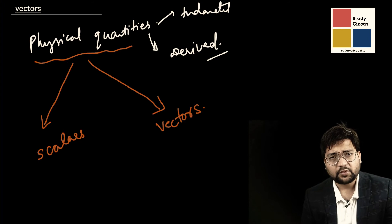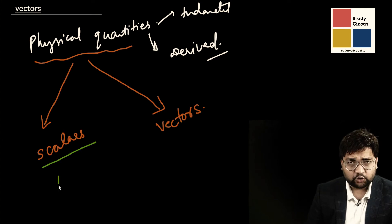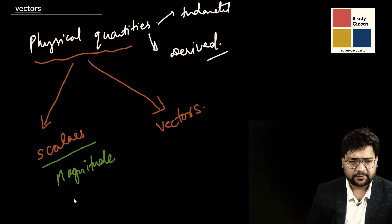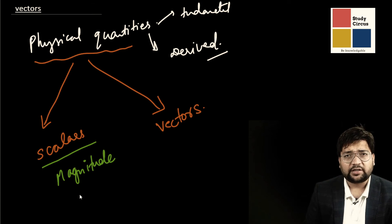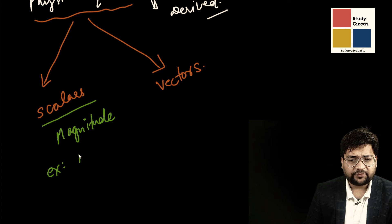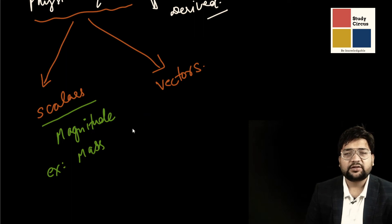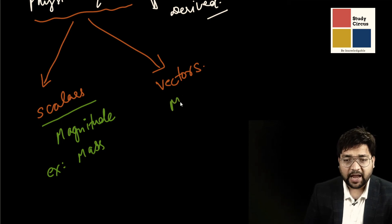What is the difference? Scalars are physical quantities for which you only need magnitude to define them. Magnitude means the amount or quantity of something. For example, mass is a scalar physical quantity — you just say 5 kilograms or 10 kilograms of mass, and that is enough to define it. Vectors, on the other hand, have both magnitude and direction.